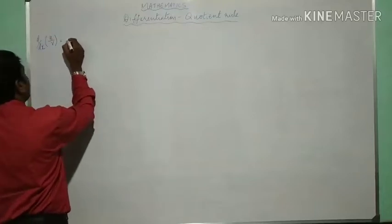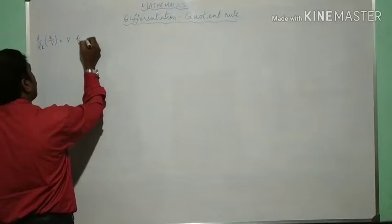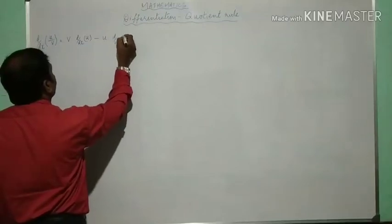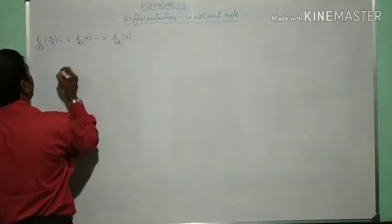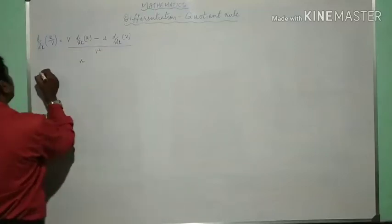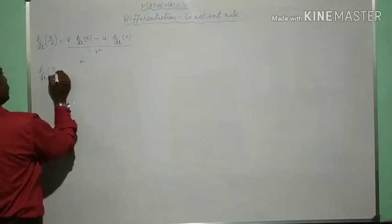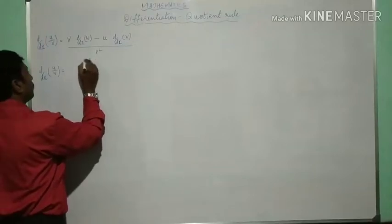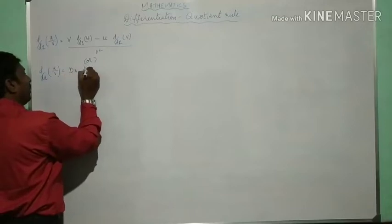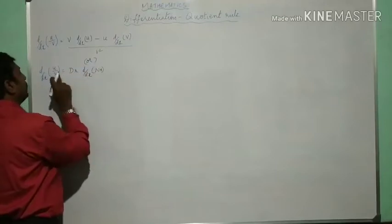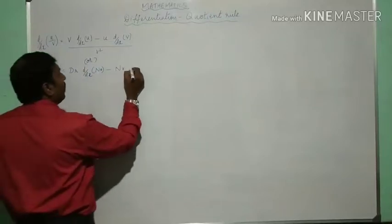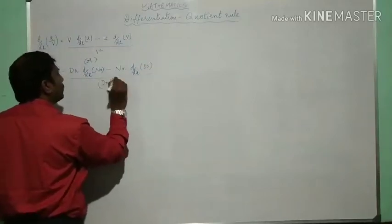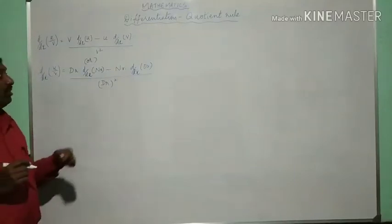Here the formula is v into derivative of u minus u into derivative of v, divided by v square. Or d by dx of u by v—another easy method to remember is denominator into the derivative of numerator minus numerator into the derivative of denominator, whole divided by denominator whole square. This is about the quotient rule.